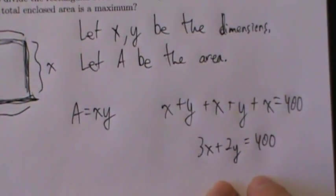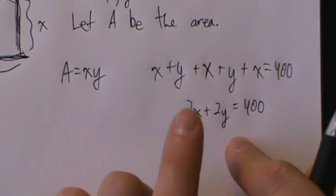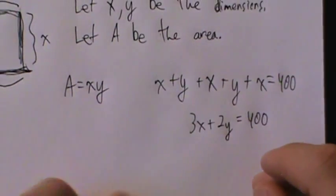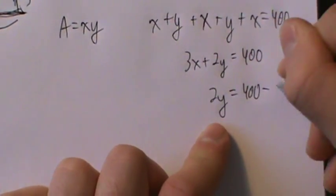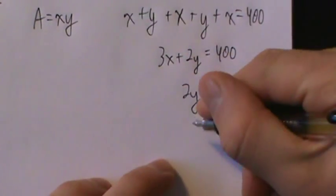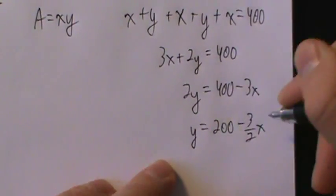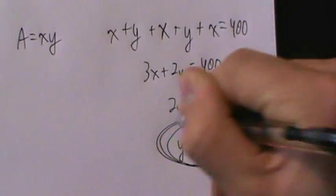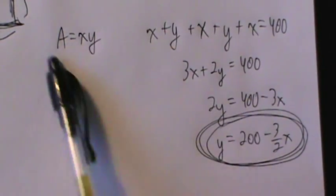From here, we want to solve this equation for one variable in terms of the other, then substitute that expression into the area equation. Let's solve for y in terms of x. So 2y = 400 − 3x, and dividing everything by 2 gives y = 200 − (3/2)x. This is our secondary equation: no matter what x and y are, they're related by this equation.